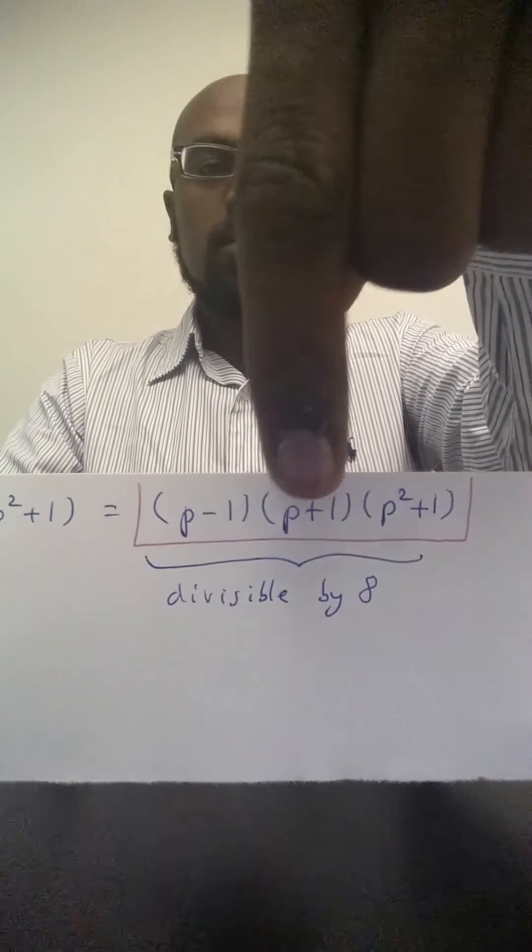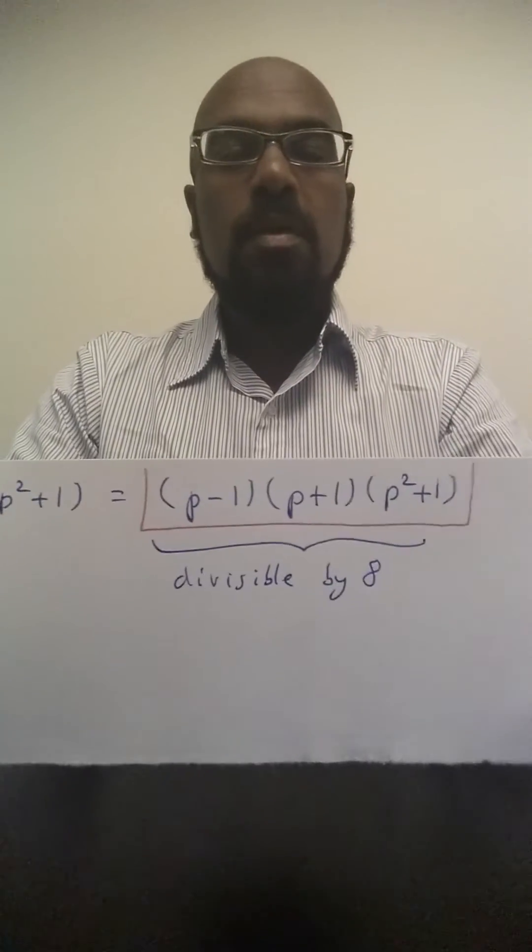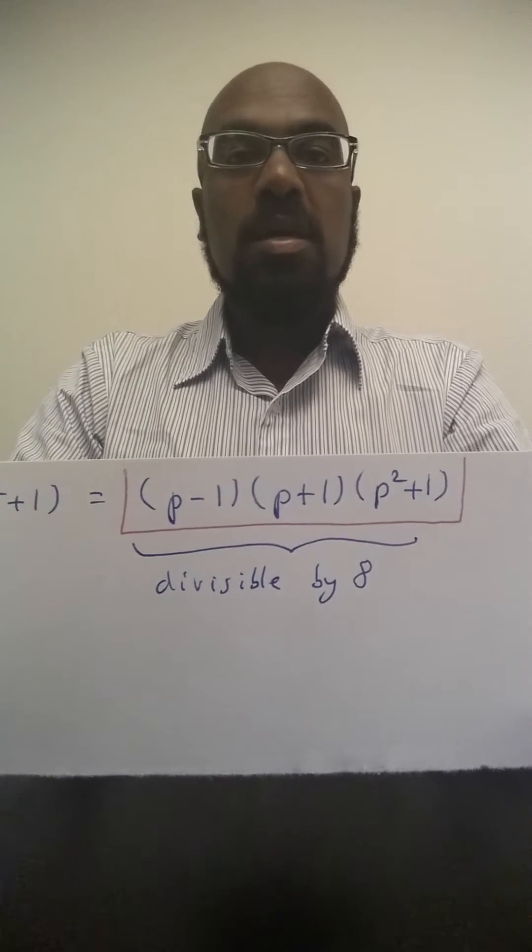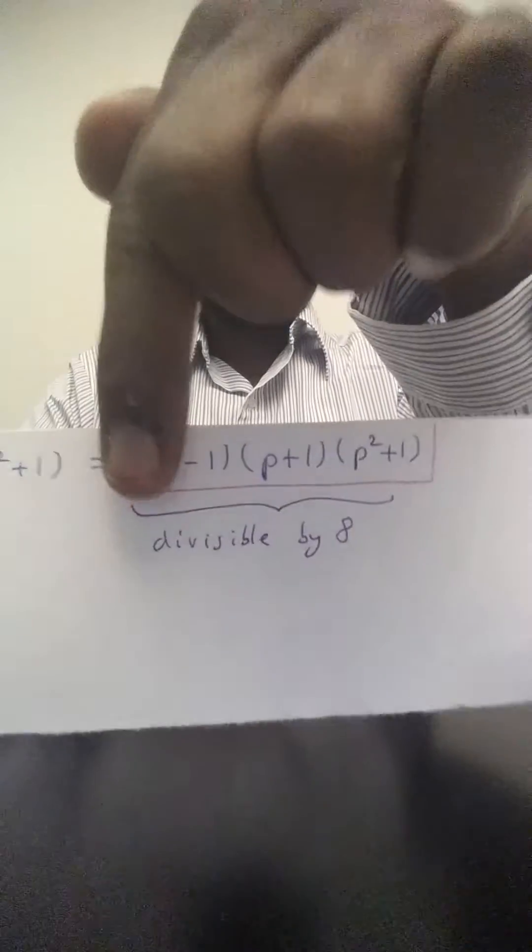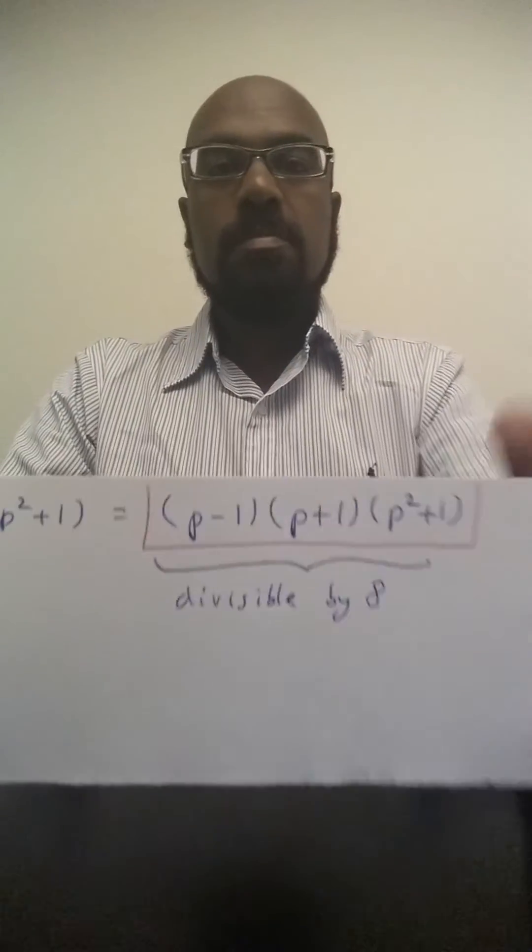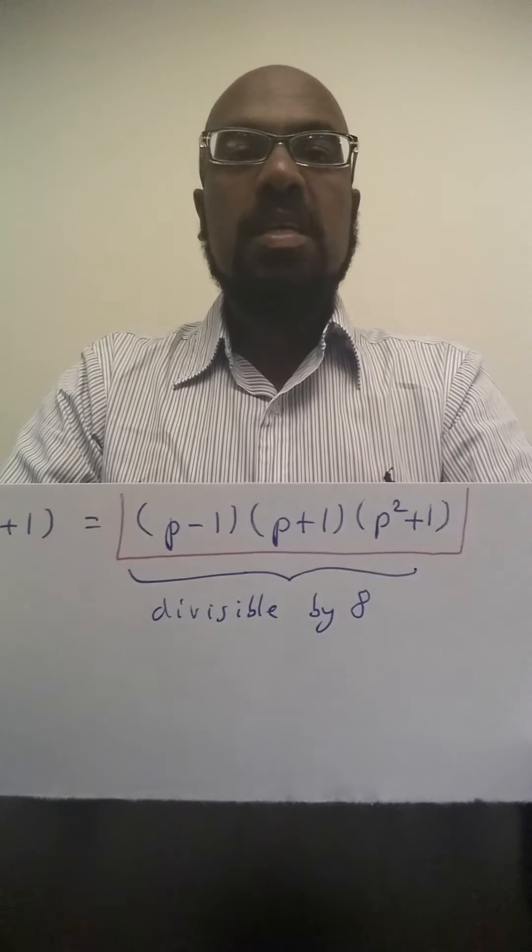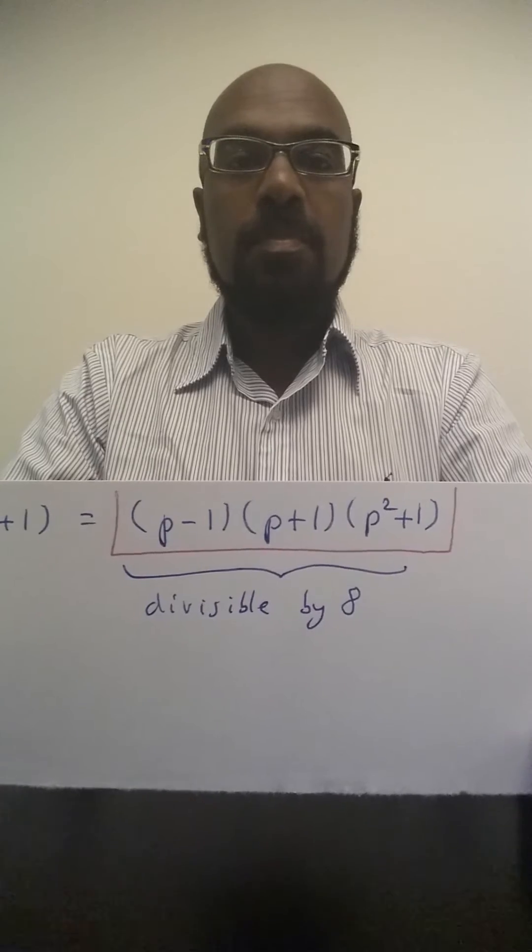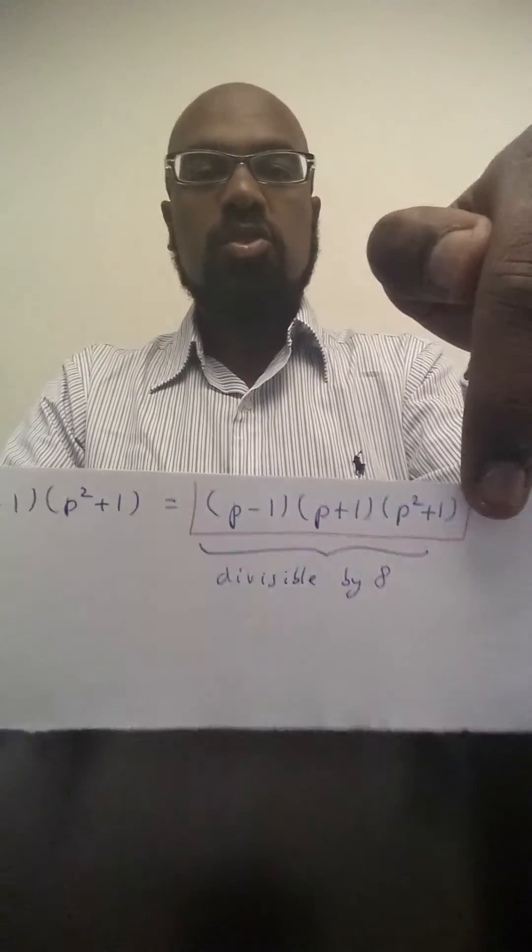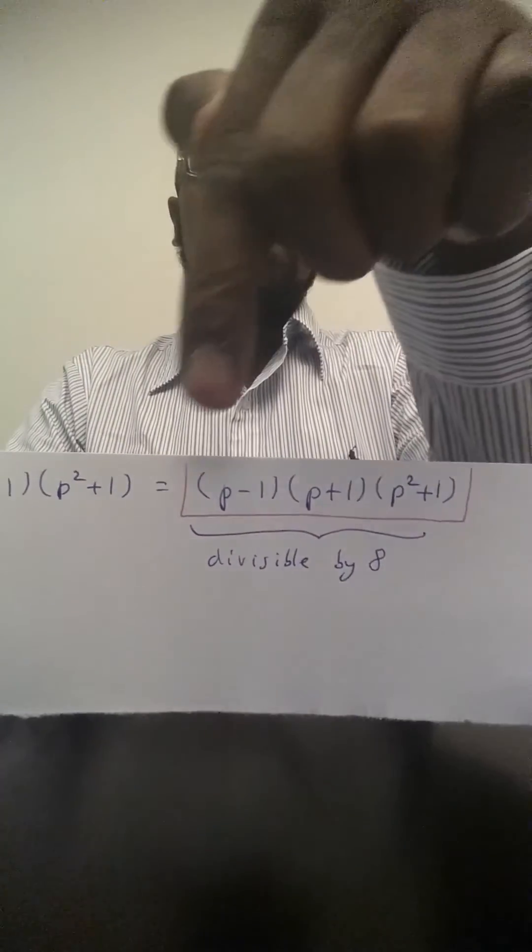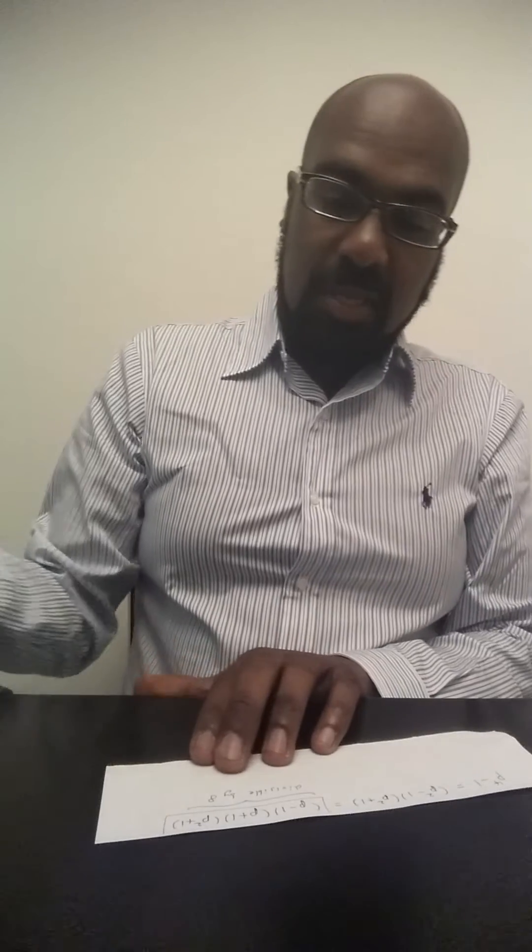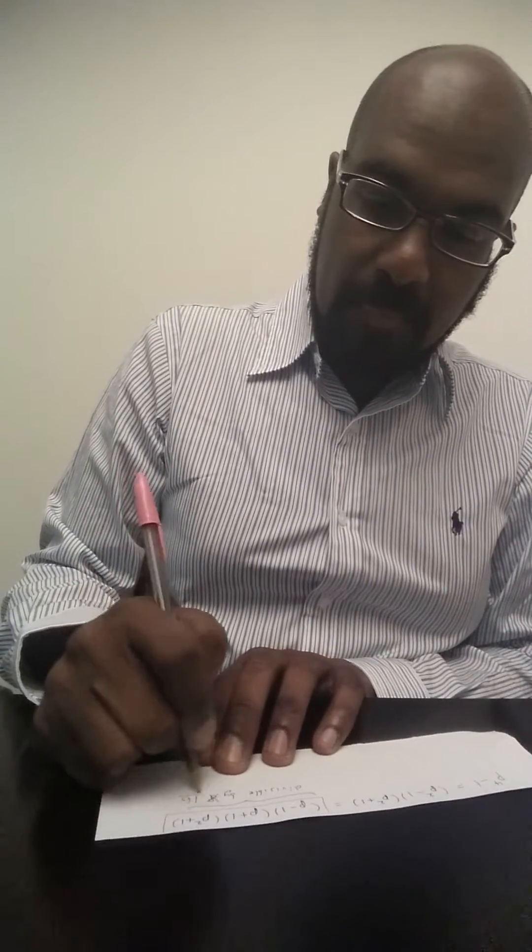Notice these two integers p minus 1 and p plus 1 are not only even but they're actually consecutive even numbers. p plus 1 is exactly 2 more than p minus 1. So for instance if p was 11 we'd have 10 and 12. If p was 13 we'd have 12 and 14. If you have two consecutive even numbers one of them must be divisible by 4. So one of these two is divisible by 4. So among these integers we have something divisible by 2, something divisible by 2, and something else divisible by 4. So in fact the entire expression is not divisible by only 8 but is actually divisible by 16.